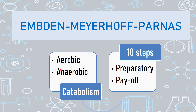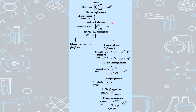Both pathways have only one sole aim: to produce ATP, that is to produce energy. The EMP pathway is divided into 10 steps. The first 4 steps are called the preparatory phase, and the next 6 steps are called the payoff phase — the phase when we get back our energy. In the preparatory phase the cell has to spend a few ATPs, but in the payoff phase we get back all our ATP and in fact more. This is the complete EMP pathway; I will be detailing it step by step.